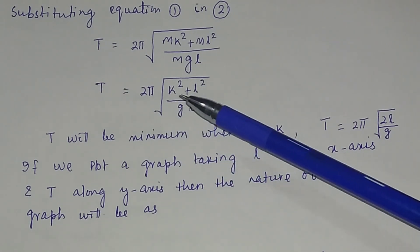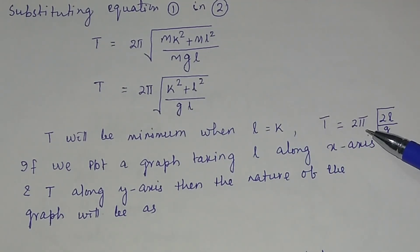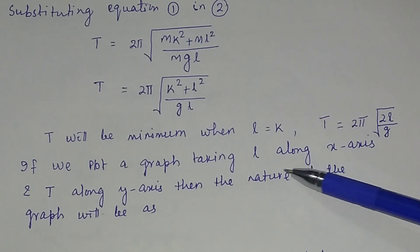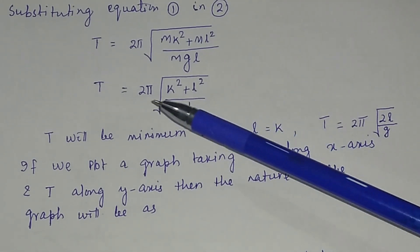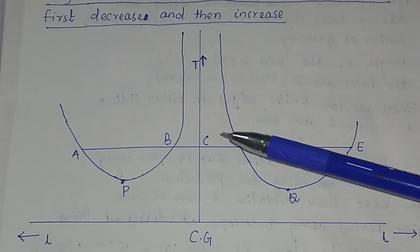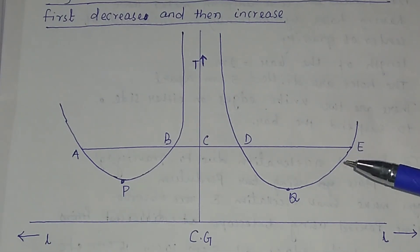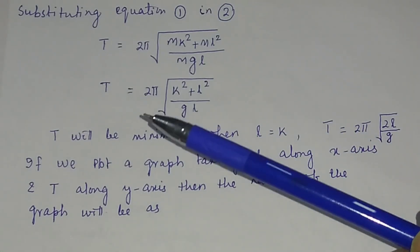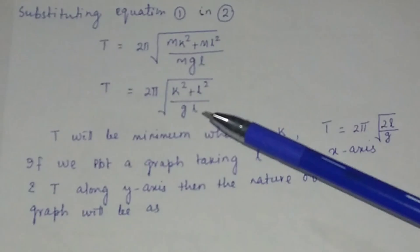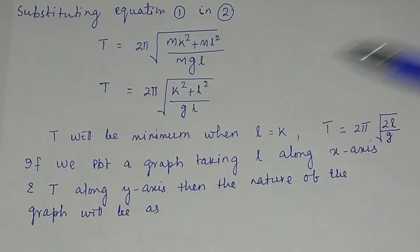T will be minimum when l equals k. If you substitute l equal to k, the minimum value of T is equal to 2 pi times the square root of 2k divided by g. If you plot a graph taking l along the x-axis and T along the y-axis, the graph explains why the time period of a bar pendulum first decreases and then increases — it follows the equation T equals 2 pi times the square root of k squared plus l squared divided by gl.